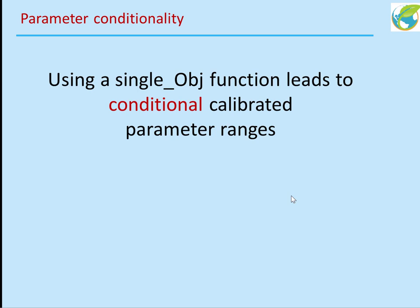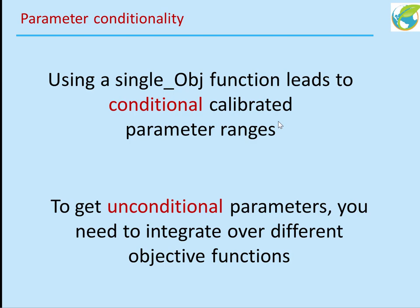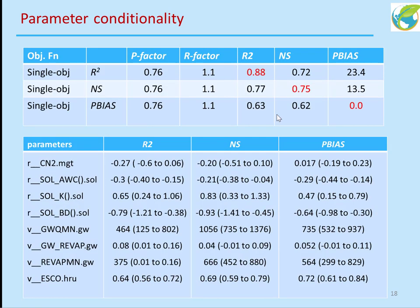This happens because parameters are conditioned on the objective function you use. A single objective function leads to a conditional set of calibrated parameters, conditioned on that objective function. This is analogous to using different land uses — if you calibrate with one land use, you get different parameters than if you had used another. So your calibrated parameters get conditioned on the objective function. To get unconditional parameters with respect to objective function, you need to integrate over different objective functions — that's why multiple objective functions were introduced.